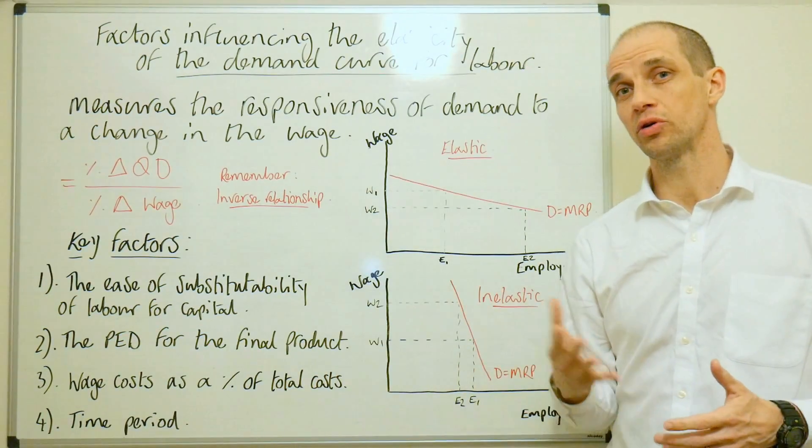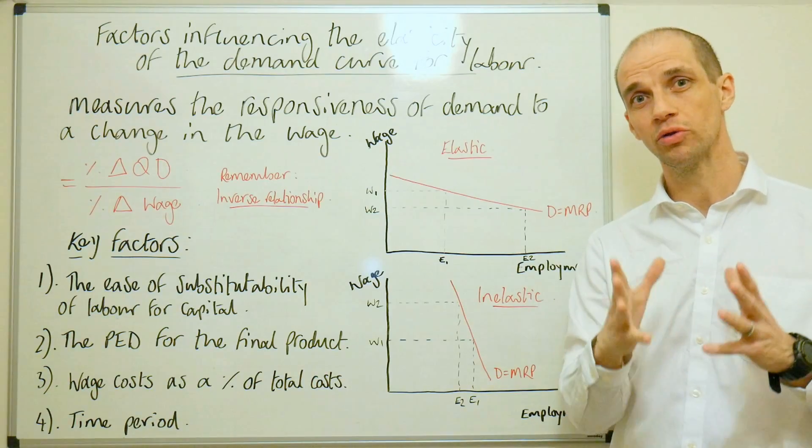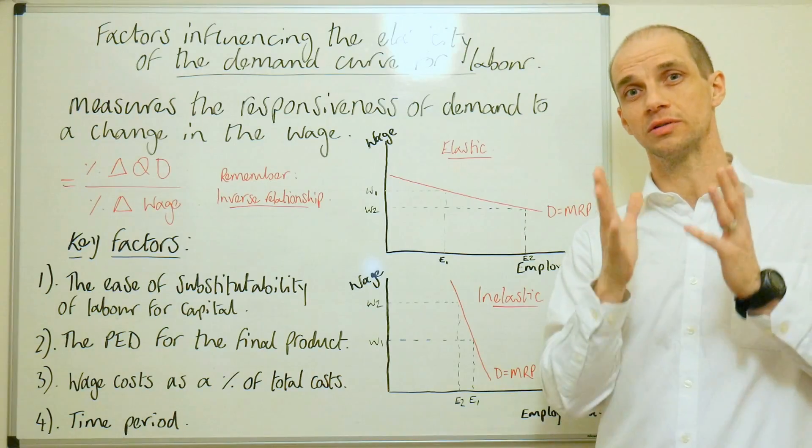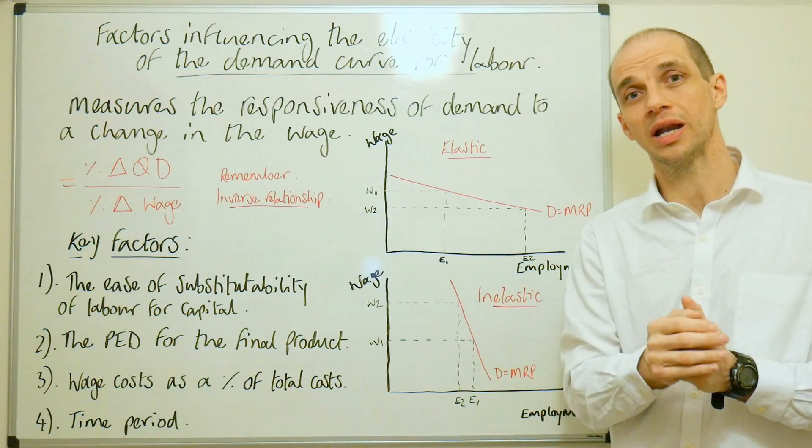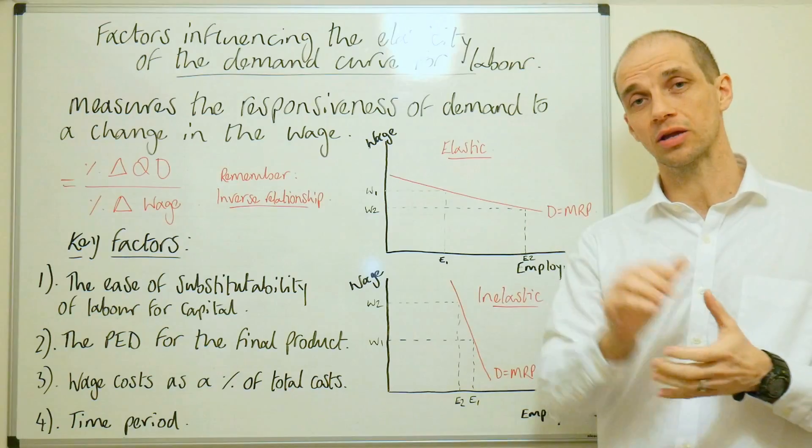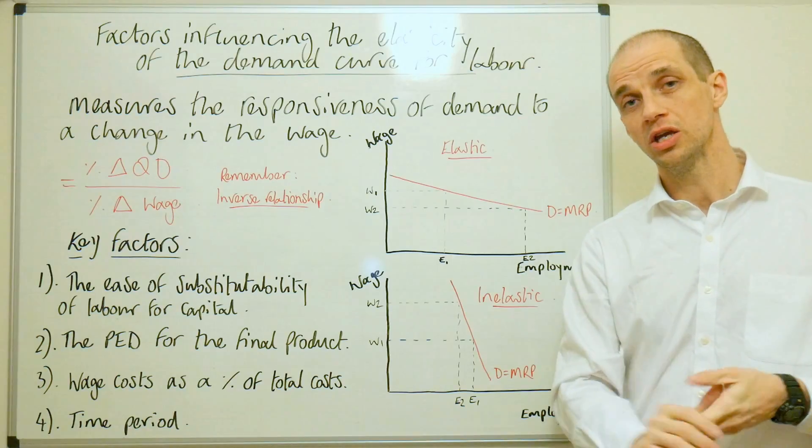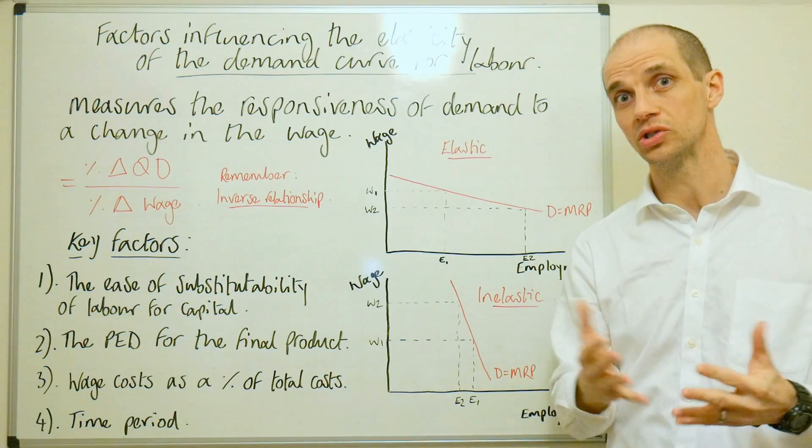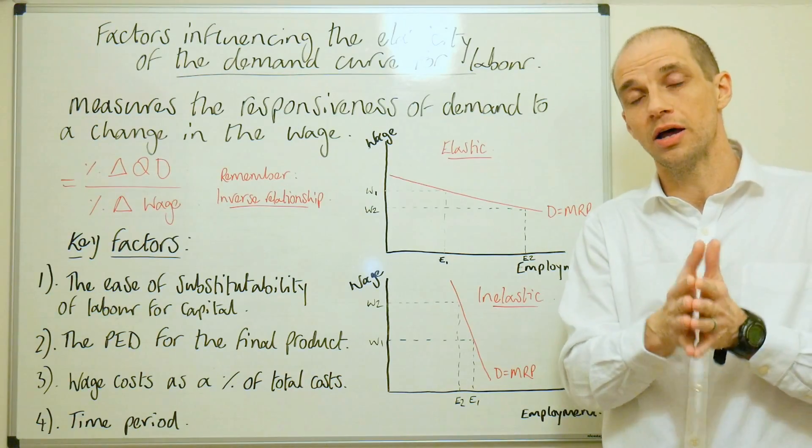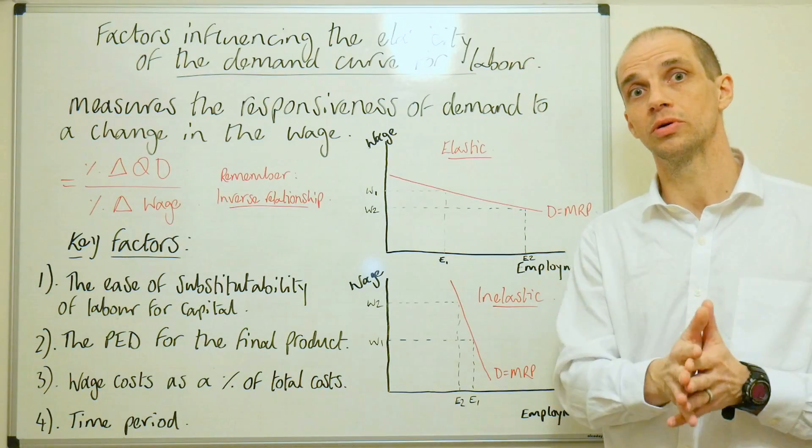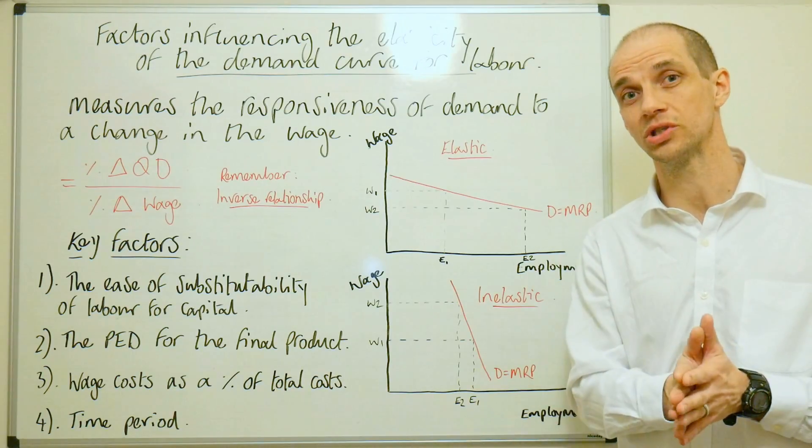The price elasticity of demand for the final product is our next one. And that is that if there is an inelastic demand for the final good, because it's very well branded, because it's relatively unique, and highly differentiated, then it may well mean that you can actually increase the price of that good and pass on any wage costs, any changes in or increases in the wage level, you can pass those costs on easily to your consumers, knowing that because you have some unique differentiating aspects, and non-price competition, in essence...